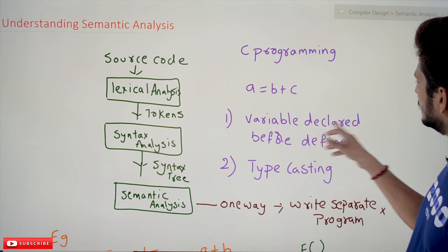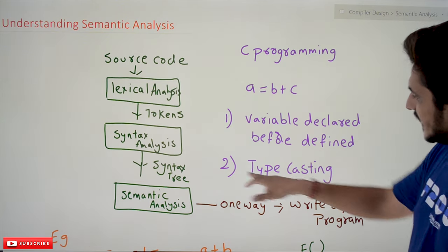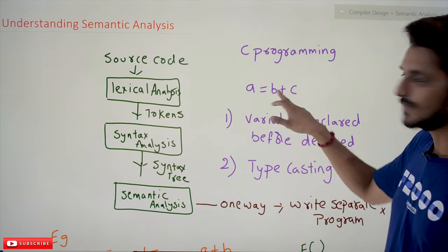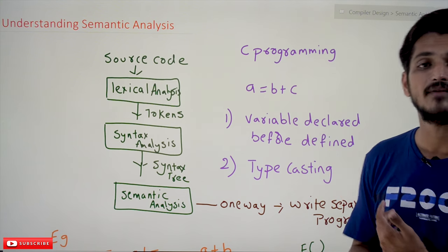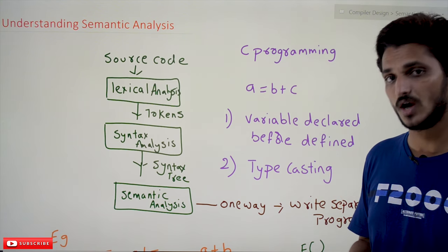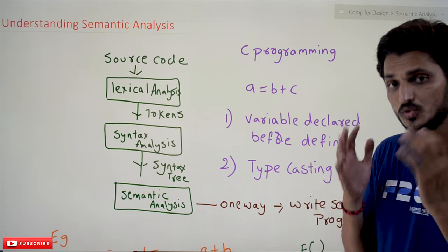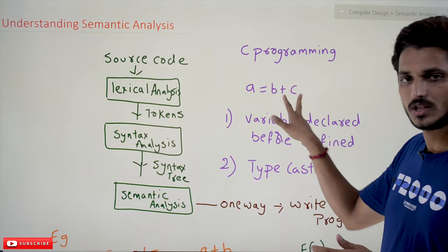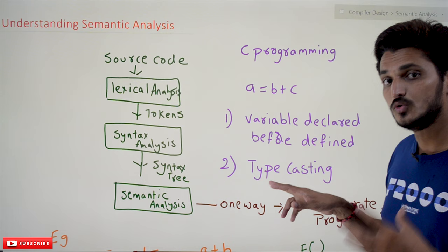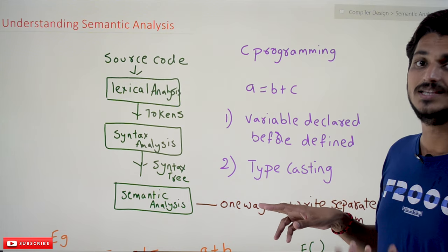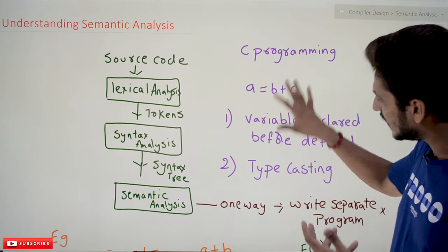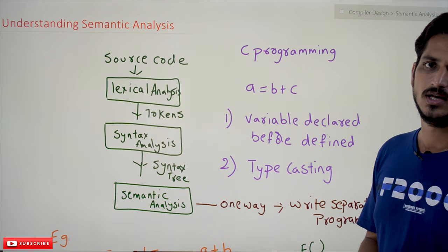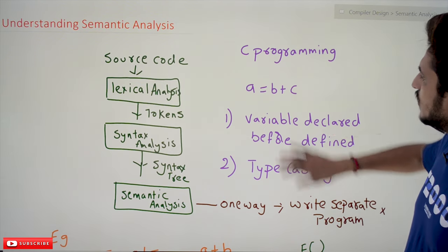The second semantic condition is type casting. If you are doing b + c, we have to check whether both b and c are of the same type or not. If they are not, we need to perform some action based on the types of these two variables. These kinds of conditions in C language come under the semantic analysis phase.